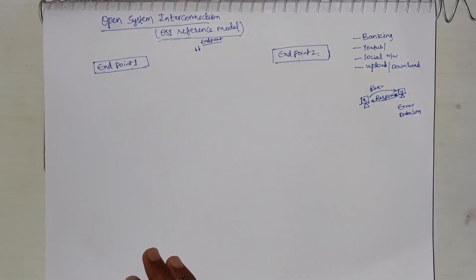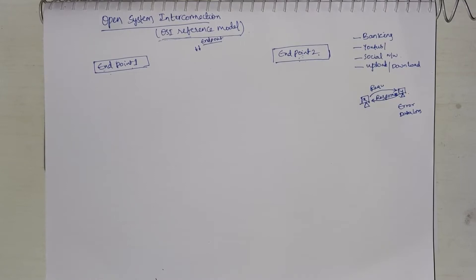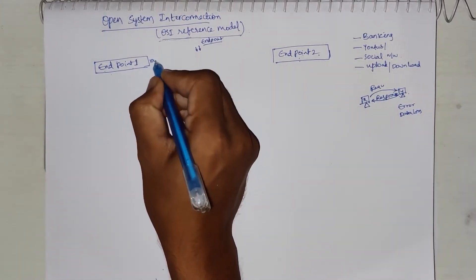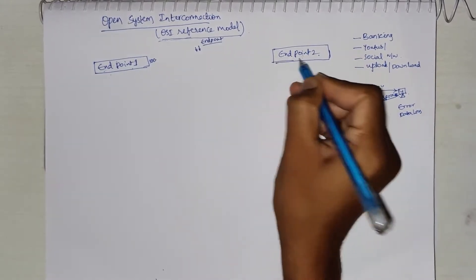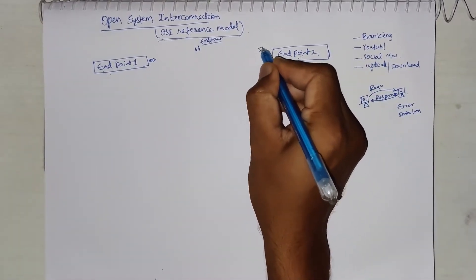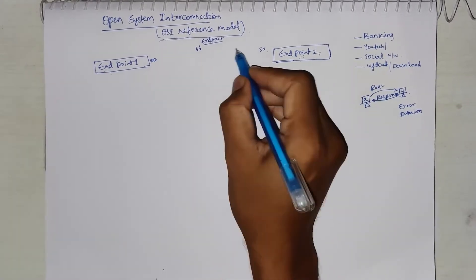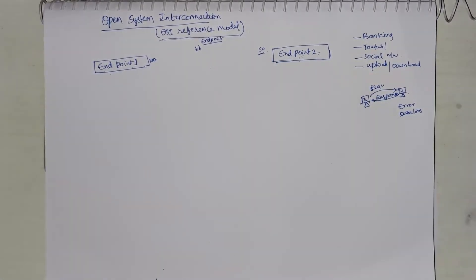The OSI reference model is a layered architecture with 7 layers. Why layered? Because one single unit handling all tasks — like error control, flow control, and data control — would be complex. For example, if Endpoint 1 sends 100 bytes of data and Endpoint 2 can only receive 50 bytes at a time, the remaining 50 bytes would be lost. Maximum transmission unit controls and all such tasks cannot be addressed by a single unit — it would be too complex.